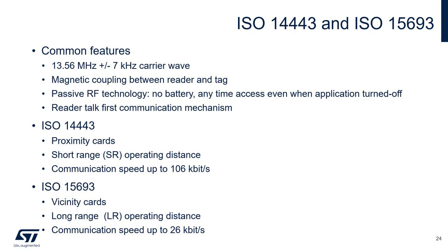ISO 14443 and 15693 have some common features. They're both based upon a 13.56 MHz carrier signal, both have magnetic coupling between the reader and the tag, and it's a passive RF technology. In addition, it's a reader-talk-first communication mechanism. ISO 14443 uses proximity cards and is a short-range operating distance specification; communication speed is up to 106 kilobits per second. ISO 15693, on the other hand, uses vicinity cards and is a long-range operating distance specification; the communication speed is 26 kilobits per second.